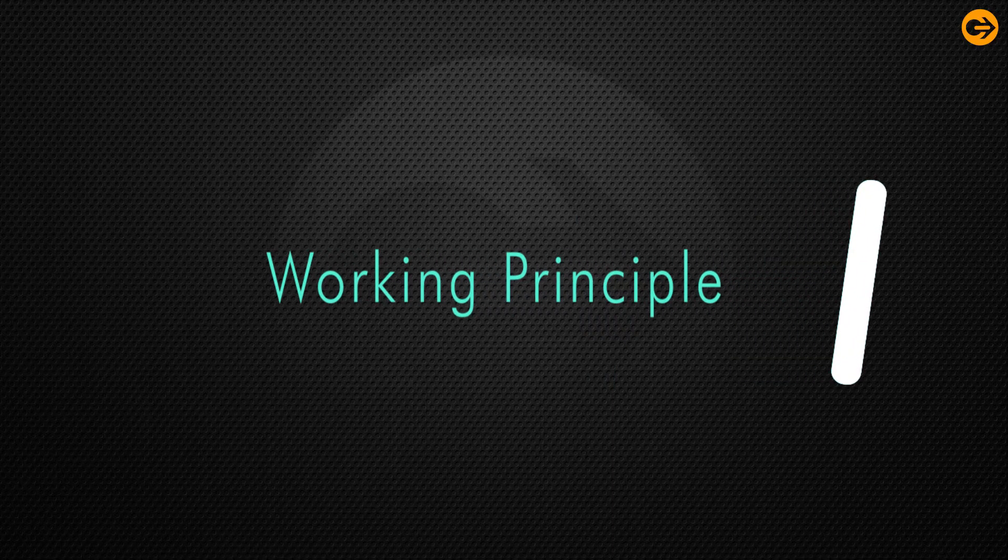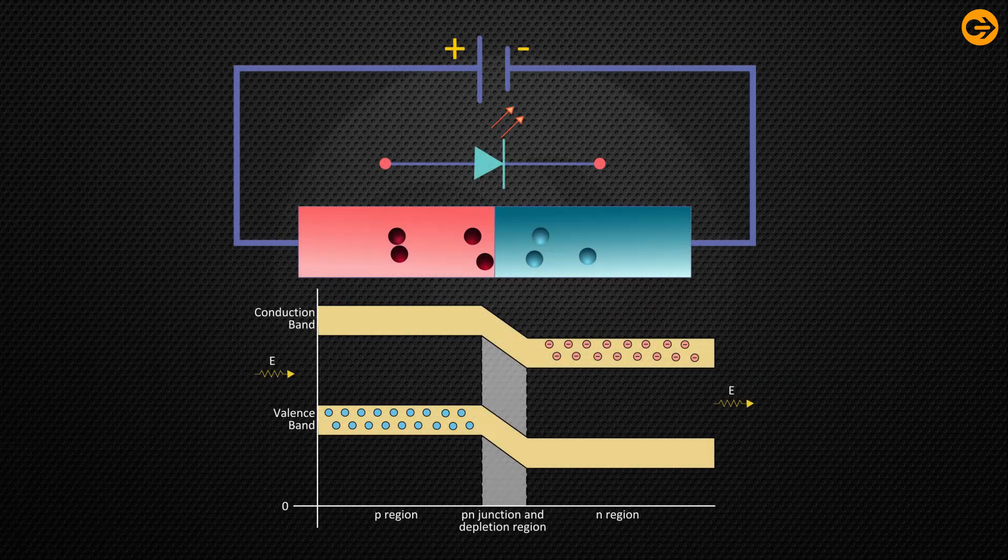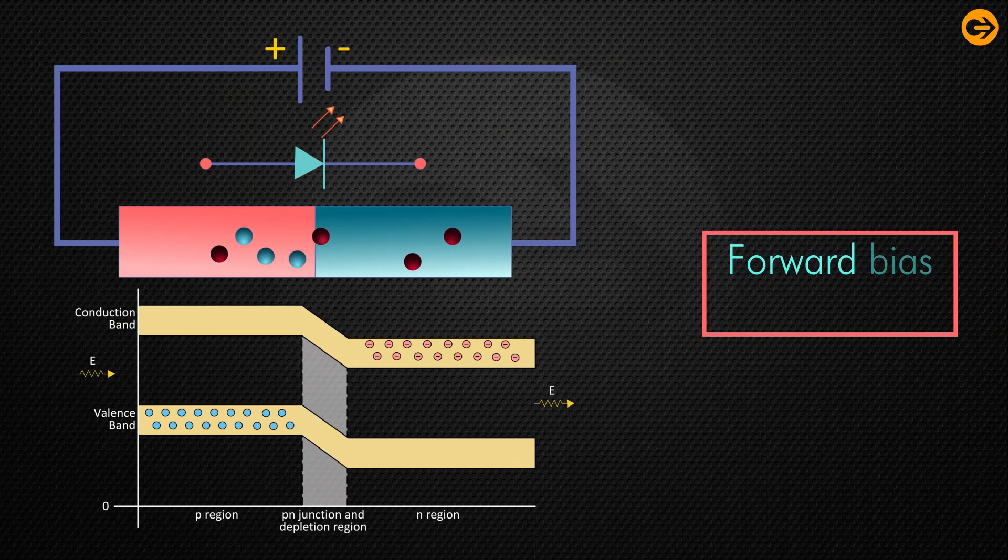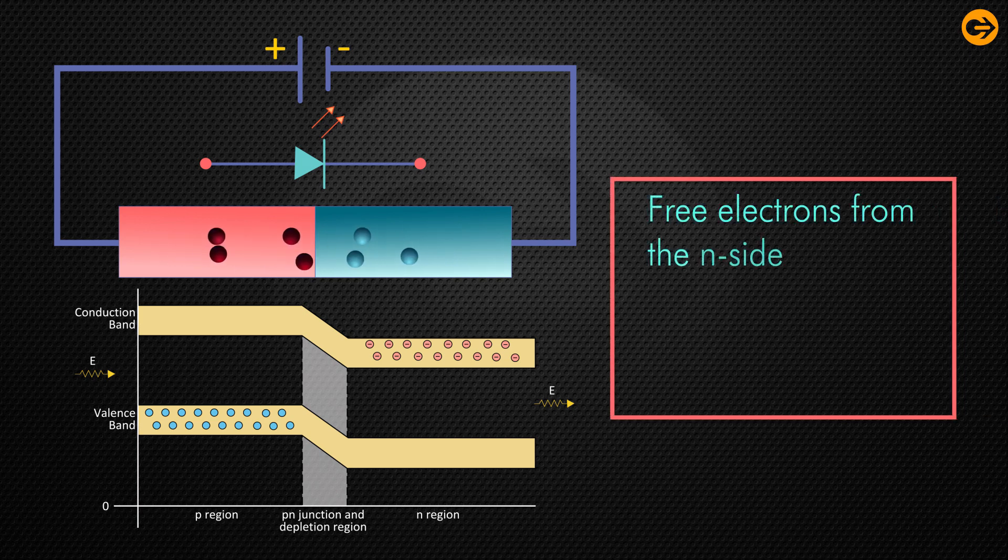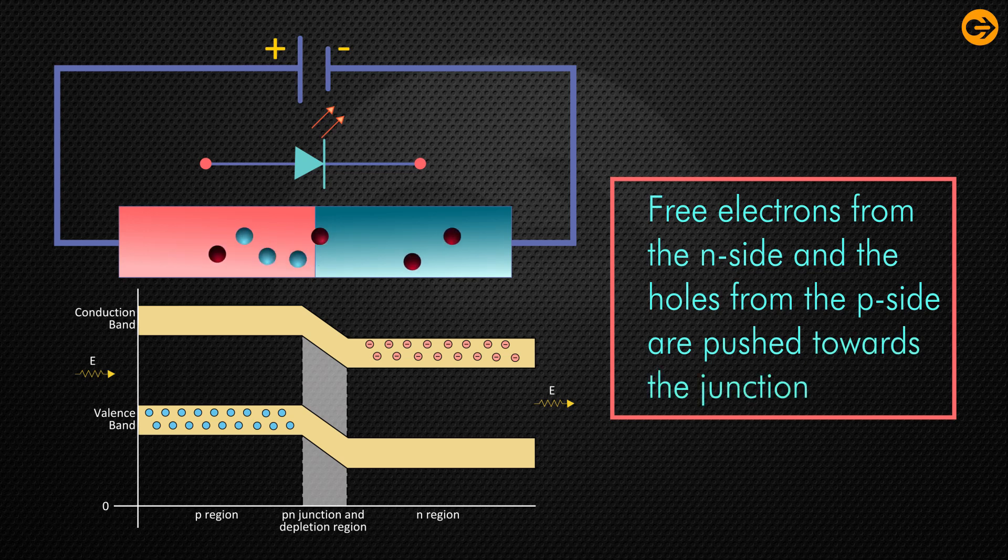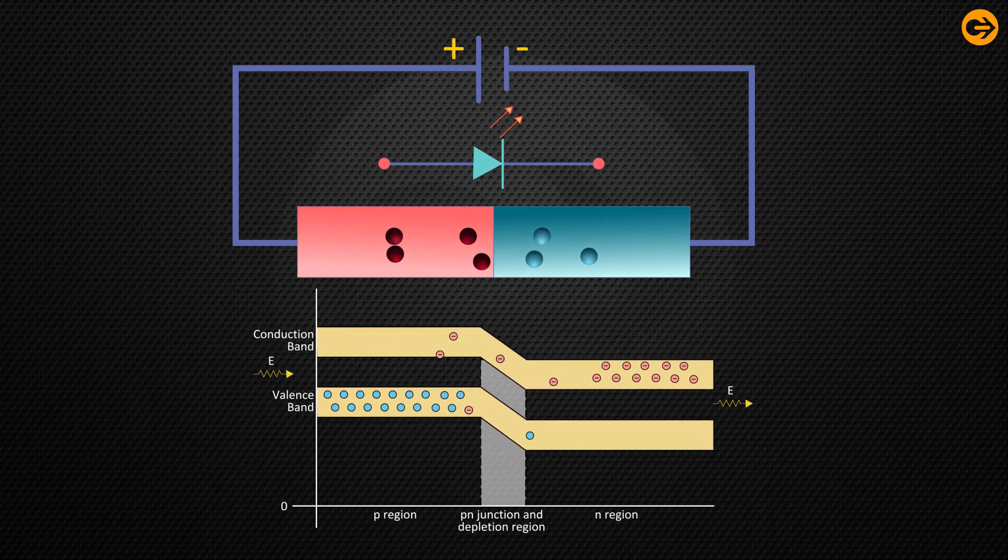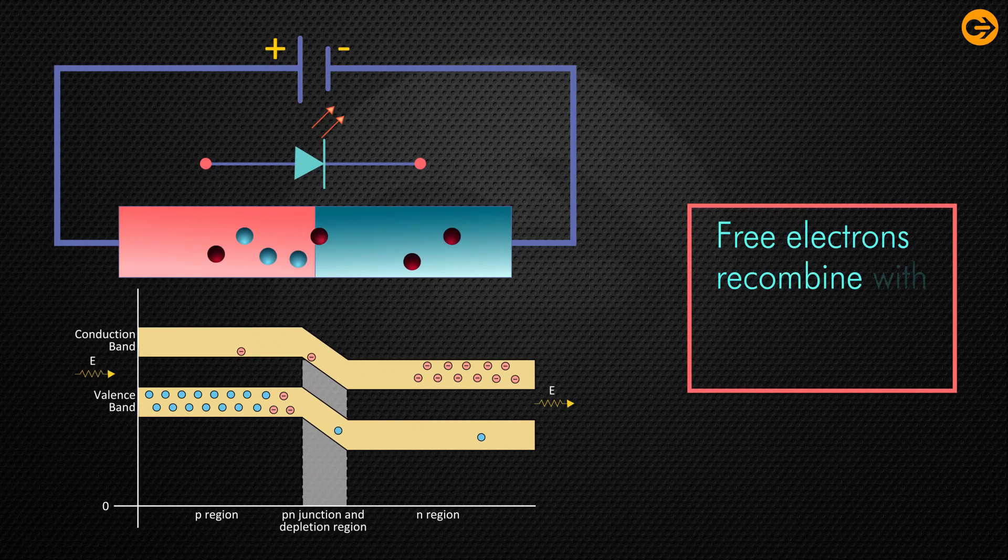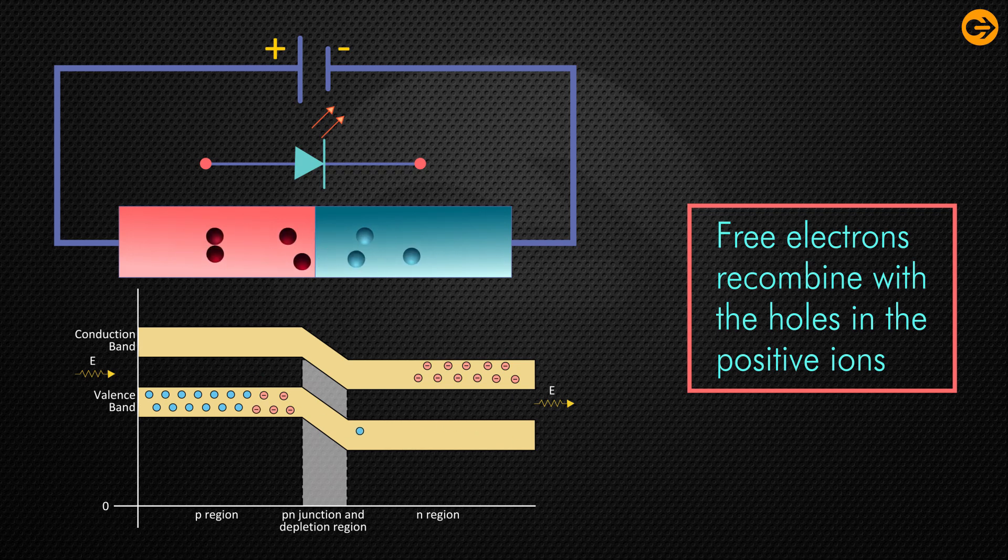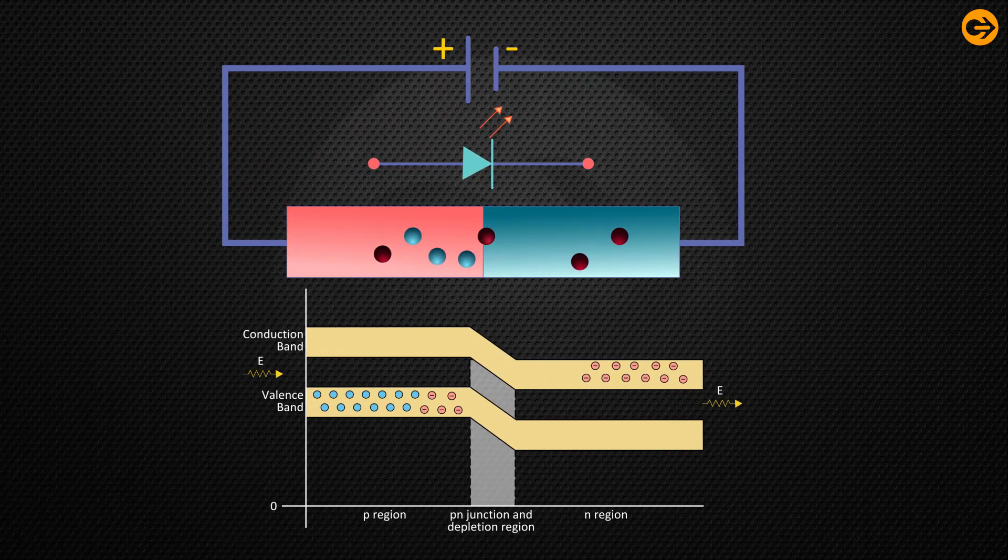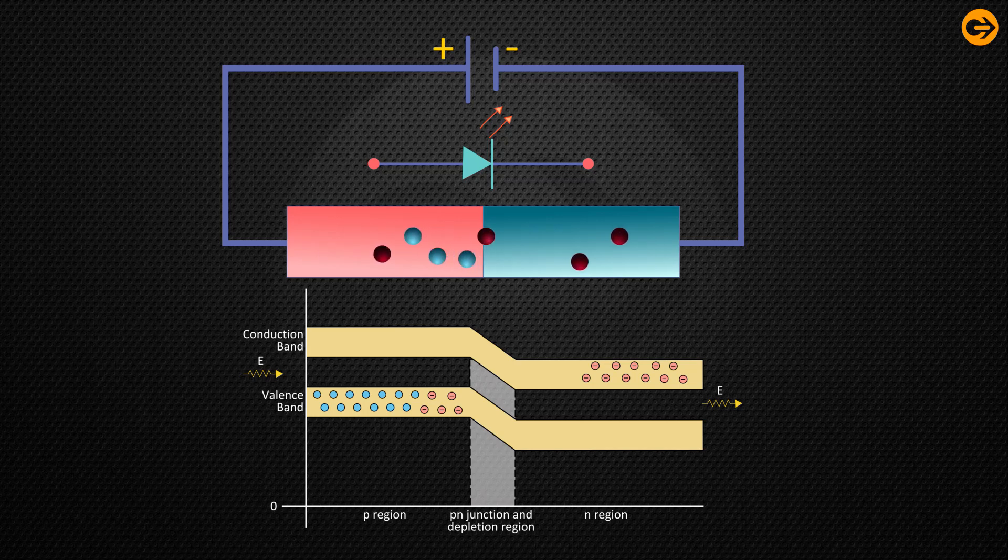Now let us talk about the working principle of LED. The light emitting diode only works in forward bias condition. When it is in forward bias, the free electrons from the n-side and the holes from the p-side are pushed towards the junction. When free electrons arrive at the junction or depletion region, some of the free electrons recombine with the holes. Thus, free electrons recombine with the holes in the depletion region. Similarly, holes from the p-side recombine with the electrons in the depletion region. Because of the recombination of free electrons and holes in the depletion region, the width of the depletion region decreases.